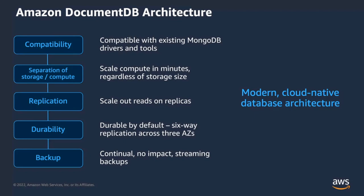With DocumentDB's managed replication, customers can scale out reads by leveraging read replicas. DocumentDB allows up to 15 replicas in a cluster and lets you scale to millions of reads per second. DocumentDB provides high durability by default — data is replicated six ways across three AZs. Backups in DocumentDB are continual, incremental, and streamed to S3 with no impact to application performance.